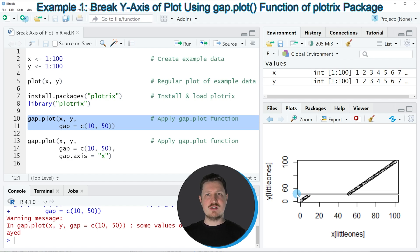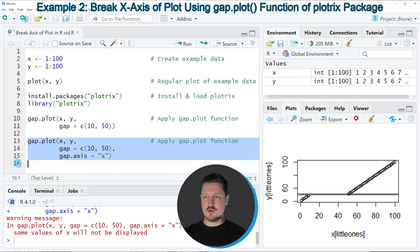Similar to that, we can also insert a break on the X-axis as you can see in lines 13 to 15 of the code. So in lines 13 and 14 I'm using the same syntax as in the previous example. However, this time I'm also specifying the gap.axis argument to be equal to X. So if you run lines 13 to 15 of the code, you can see at the bottom right that our plot is updated. And this time we have inserted a break at the X-axis between the positions 10 and 50.